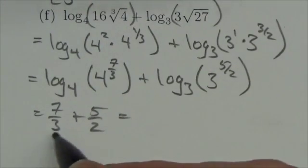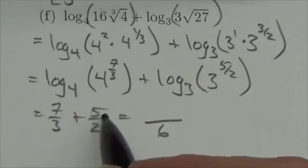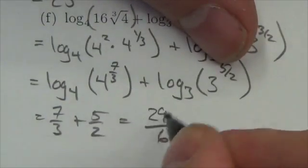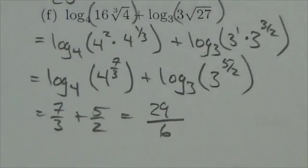Now our common denominator here is going to be 6 and so this is going to be 14 plus 15 or 29/6. That's our answer.